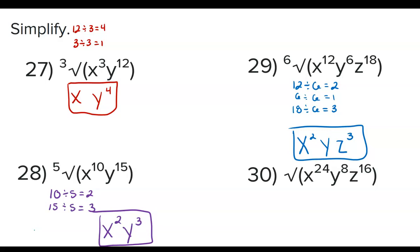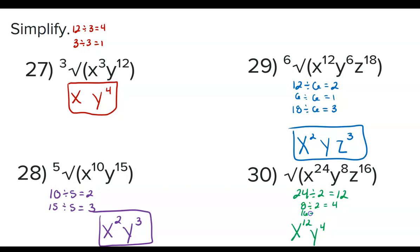Problem 30: if we don't see an index, we assume it's a square root, so the index is 2. 24 divided by 2 is 12, so we'll have x to the power of 12. 8 divided by 2 is 4, giving y to the power of 4. And 16 divided by 2 is 8, so z to the power of 8. The answer is x¹²y⁴z⁸.